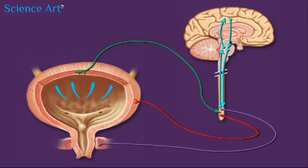When the urinary bladder becomes stretched, there is an increase in the frequency of action potentials carried from the bladder wall to the sacral region of the spinal cord.